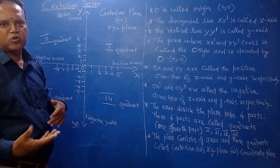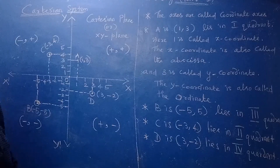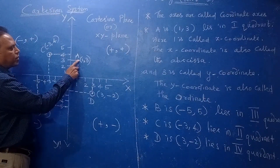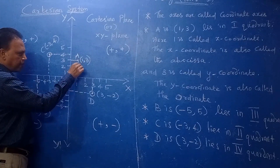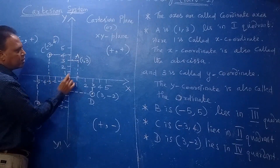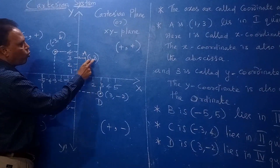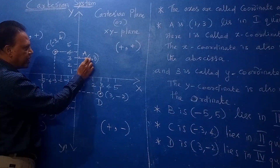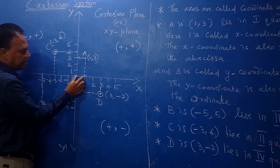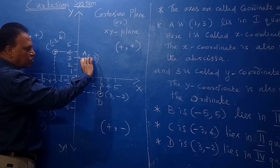Consider point A. From point A, draw a perpendicular to the X axis — it meets at 1. Draw a perpendicular to the Y axis — it meets at 3. So this point can be represented as (1, 3). The distance on the X axis is 1 unit and the distance on the Y axis is 3 units. So A is (1, 3).